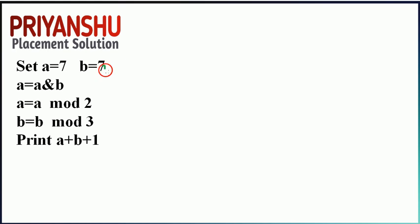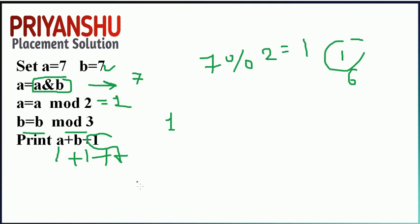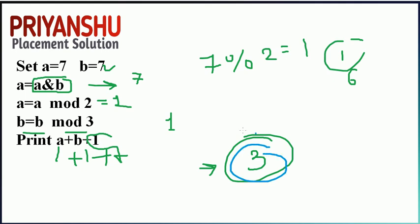Next question: a equals 7, b equals 7. When you perform AND on the same value, the result is the value itself, so a AND b equals 7, a remains 7. Then a equals a mod 2: 7 mod 2 gives remainder 1, so a equals 1. Then b equals b mod 3: 7 mod 3 gives remainder 1 (since 3 times 2 equals 6), so b equals 1. Finally a plus b plus 1 equals 1 plus 1 plus 1 equals 3.